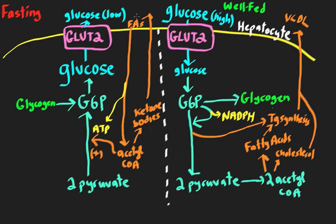At the same time, we have fatty acids entering the liver cell, going through the oxidative process, generating acetyl-CoA molecules, and ultimately generating ATP. That ATP is generated to show that oxidation of fatty acids provides energy to run gluconeogenesis. We also have the acetyl-CoA going into ketones, which then get shipped out to provide non-insulin-dependent tissues like the brain an alternate fuel source.